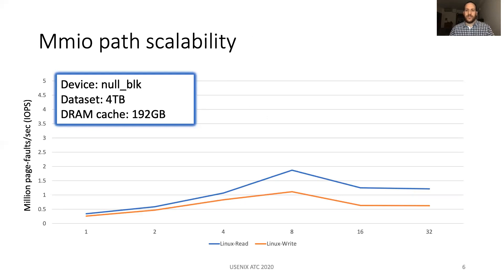We use a micro-benchmark where each thread issues a load or store instruction at a randomly generated offset in the mapped area. This instruction results in random page faults. We use an NULLBLK device in order to observe the limits in the memory-mapped I/O path; this device uses the whole I/O stack but does not issue an I/O to a real device. We use a 4TB dataset and 192GB of DRAM cache. The X-axis shows the number of threads on a 32-core server and the Y-axis shows millions of page faults per second. As each page fault is 4KB in size, this is synonymous with I/Os. The blue line shows reads, when the user issues a load instruction, and the orange line shows writes, where the user issues a store instruction. In both cases, we observe that the Linux memory-mapped I/O path fails to scale beyond 8 threads.